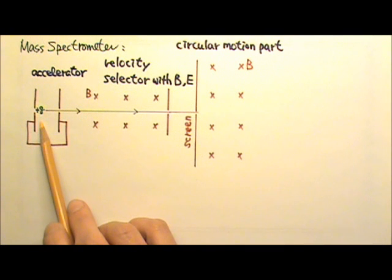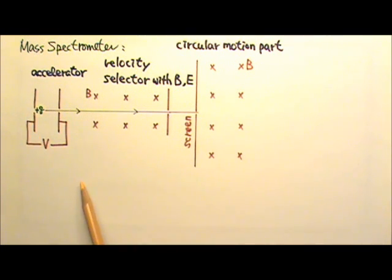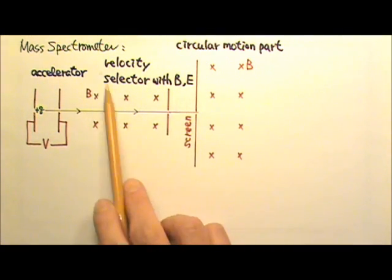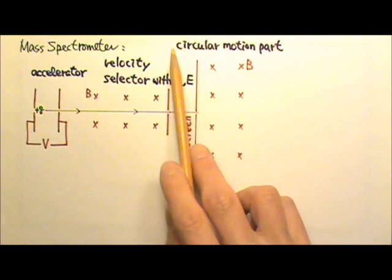Then we send the charged particle into the mass spectrometer for analysis. The three main parts of the mass spectrometer we study in this course are: accelerator, velocity selector, and the circular motion part.